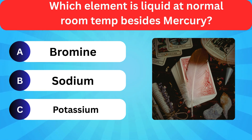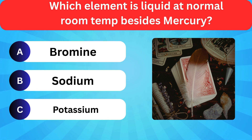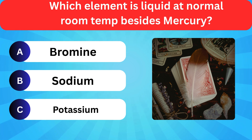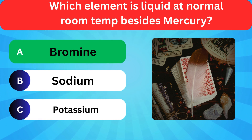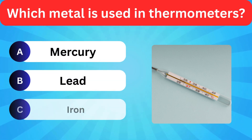Which element is liquid at normal room temperature besides mercury? Options: Bromine, Sodium, Potassium. Correct answer is bromine.